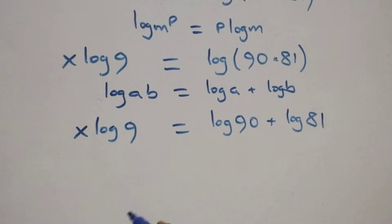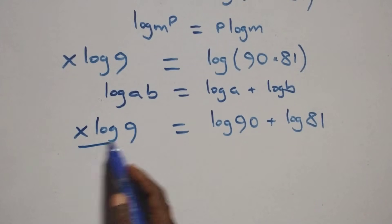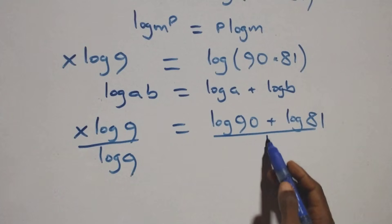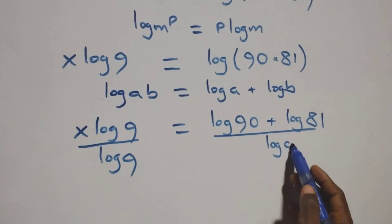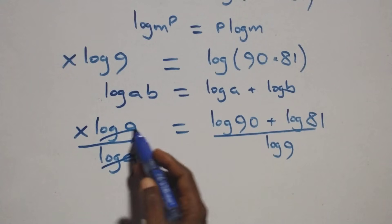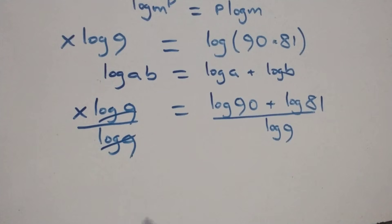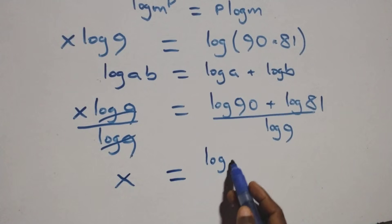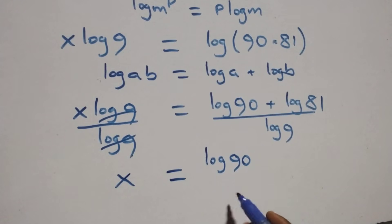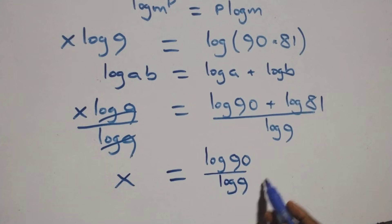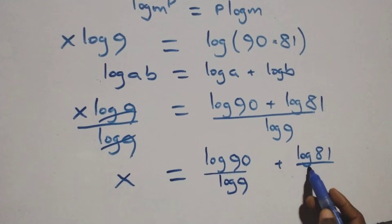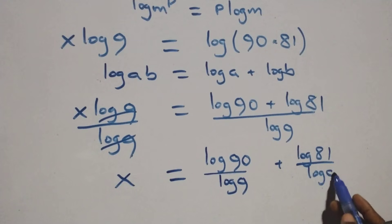The next step: divide both sides by log nine. Log nine cancels on the left. Here we have x equals log ninety over log nine plus log eighty-one over log nine.